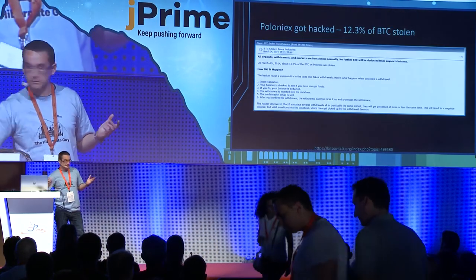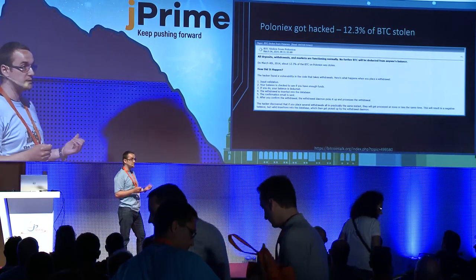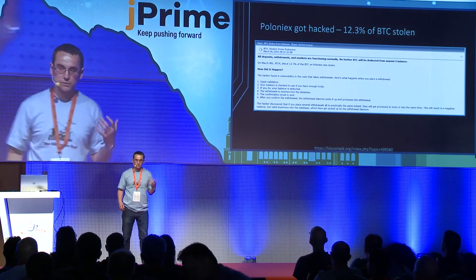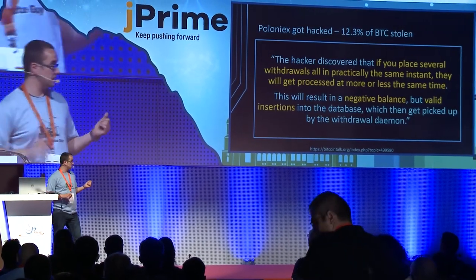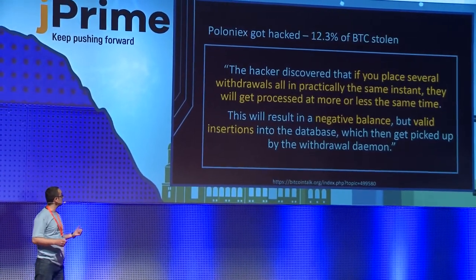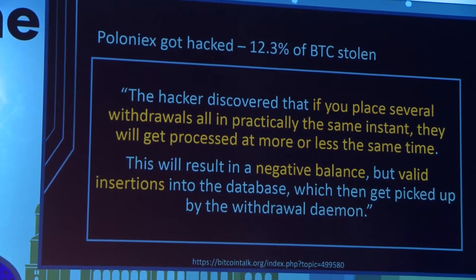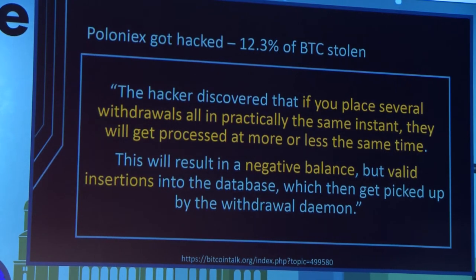They even published a post-mortem article where they said there was a flaw in the application, and the hackers sent thousands of simultaneous transactions which were not properly balanced. The hacker could withdraw more money than they had in the original account, which led to this theft. In the same period of time, there was a Bitcoin exchange, Poloniex, which also got hacked, and they lost 12% of all their Bitcoins. If the hacker placed several withdrawals at the same time, the source account resulted in a negative balance. It's still a concurrency control issue, and it's very important no matter what database you're using.